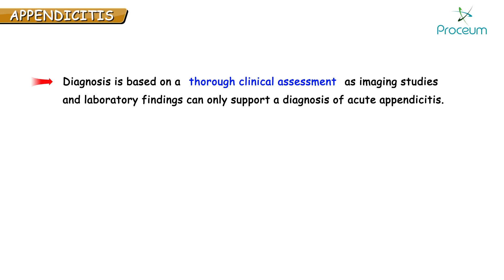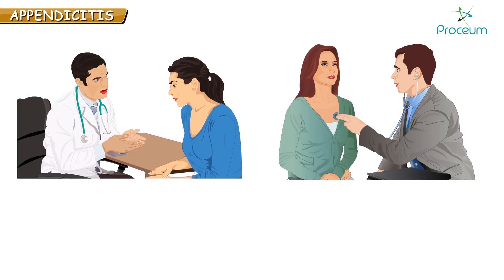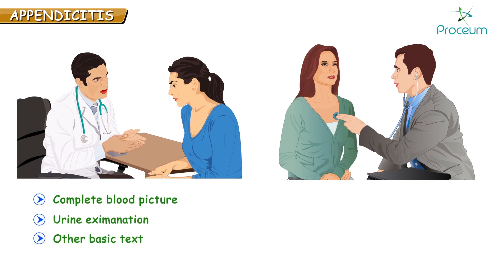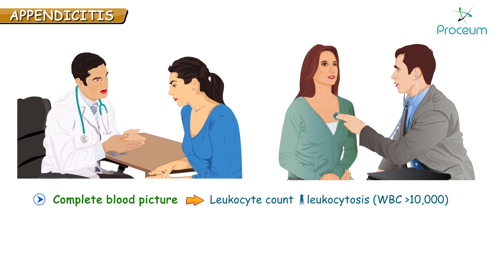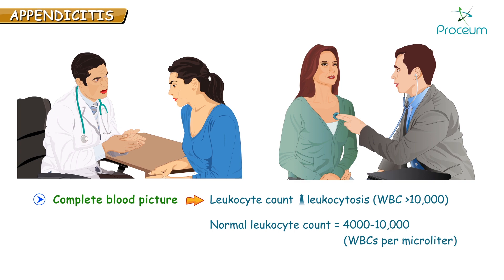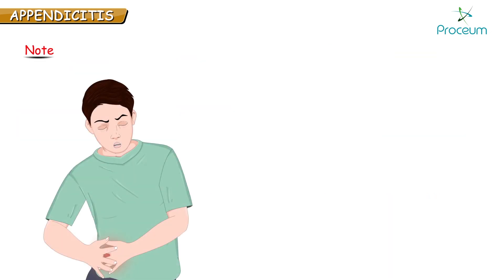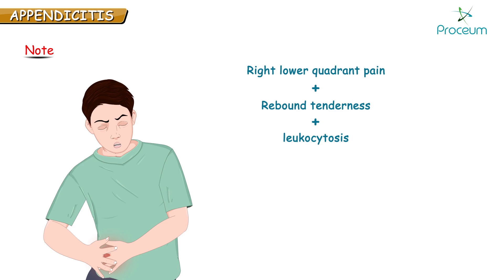Always remember, diagnosis of acute appendicitis is based on thorough clinical assessment, as imaging studies and laboratory findings can only support the diagnosis. After clinically assessing the patient, the doctor first orders routine tests like complete blood picture and urine examination. In the complete blood picture, you notice the total leukocyte count is elevated — the patient has leukocytosis. Normal leukocyte count is 4,000 to 10,000; any number greater than this is leukocytosis. A patient with right lower quadrant pain, rebound tenderness, and leukocytosis means appendicitis.